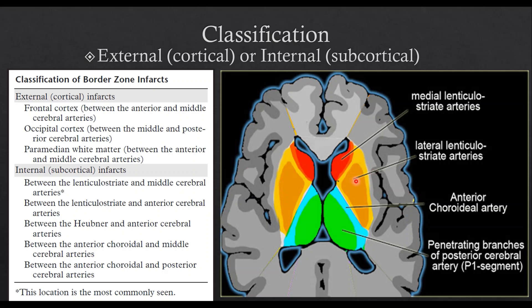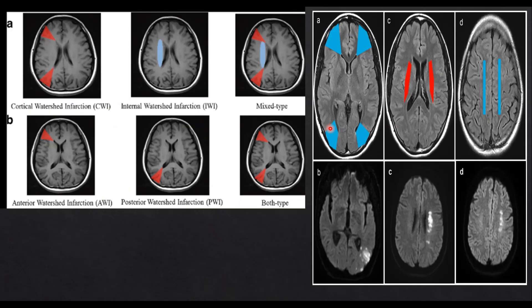Internal watershed infarcts occur between the lenticulostriate artery and the MCA, the medial lenticulostriate arteries and the ACA, the anterior choroidal artery and the MCA, the anterior choroidal artery and the PCA, and between Heubner's artery and the anterior cerebral artery. In this session, we will review only external watershed infarcts. Here are a few more images: anterior cortical watershed infarct, posterior cortical watershed infarct, and a mixed variant.